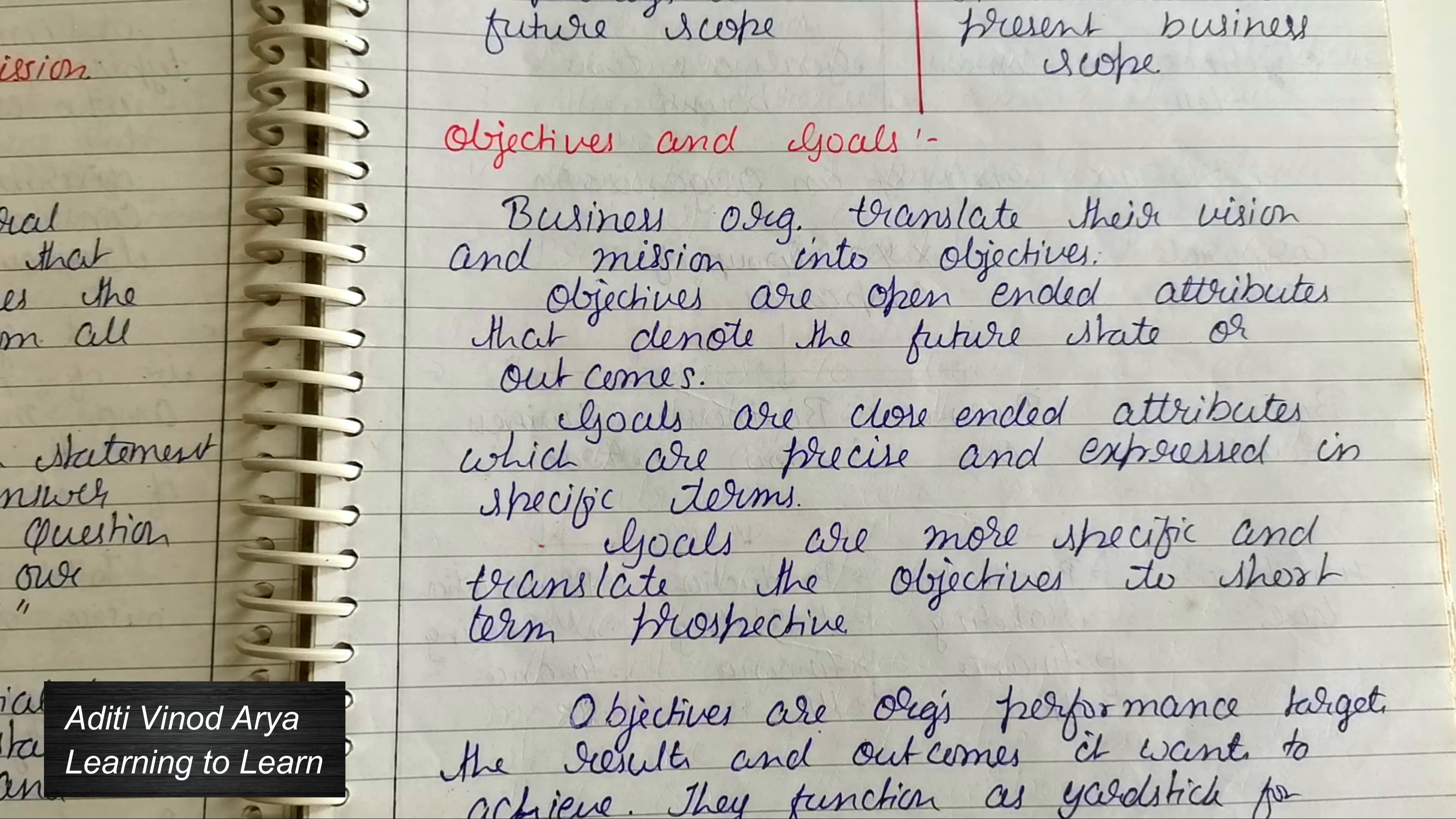Business organizations translate their vision and mission statement into objectives. As you know, the broadest objective any organization can have is the vision statement. Within the circle of vision statement comes the mission statement.